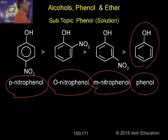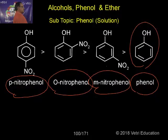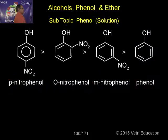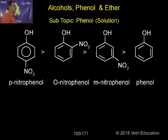Phenol is the standard — it has acidic nature. Next comes meta, next comes ortho, next comes para. This is the correct order of acidity, based on the -M effect of the NO₂ group.